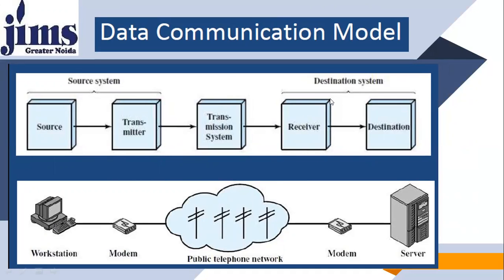This is the transmission system. The data comes from the channel or transmission system. After processing — for example, if you do modulation in the transmitter, then you do demodulation in the receiver. After demodulation, you get the data to the destination — the same data generated by the source. So basically, three systems work together: source system, destination system, and the transmission system in between.